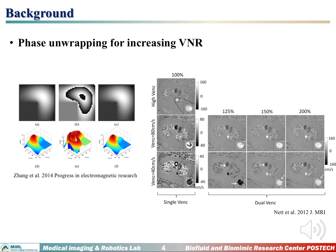To resolve this problem, previous studies suggested the phase unwrapping method for increasing VNR. By recovering all wrapped phase data, VNR can be increased. However, this phase unwrapping technique requires excessive time to perform iterative calculations, and sometimes it fails to find exact solutions. It is almost impossible to recover the original velocity data if the phase wrapping is too severe.